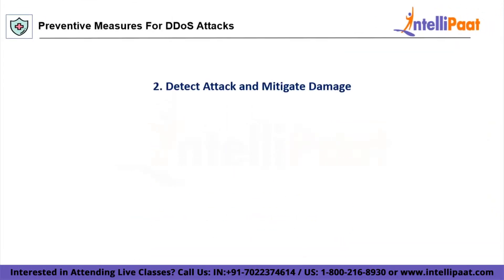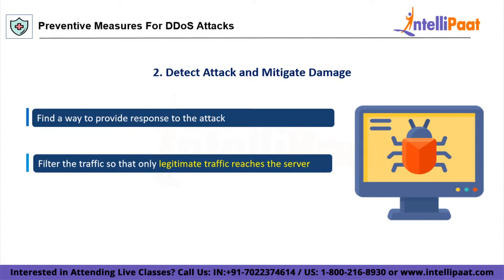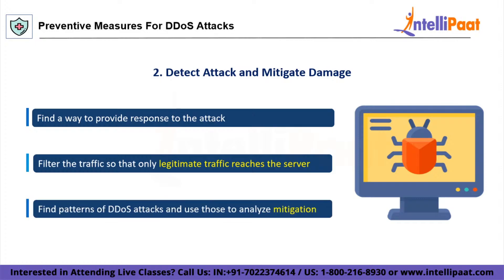The next preventive tip is to detect an attack early and mitigate the damage beyond that point. Once you detect the attack, you'll need to drop malicious DDoS traffic before it reaches your server so it doesn't throttle and exhaust your bandwidth. Filter the traffic so only legitimate traffic reaches the server. By intelligent routing, break the remaining traffic into manageable chunks that can be handled by your cluster resources. The most important stage in DDoS mitigation is looking for patterns of DDoS attacks and using those to strengthen your mitigation techniques — for example, blocking an IP repeatedly found to be offending.